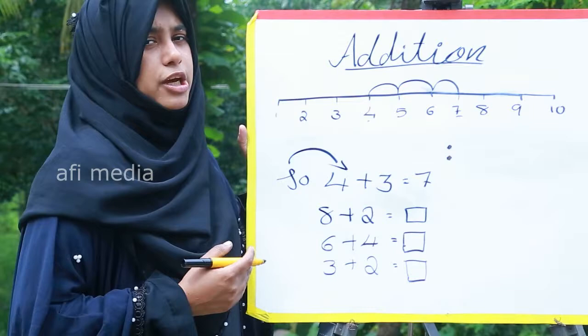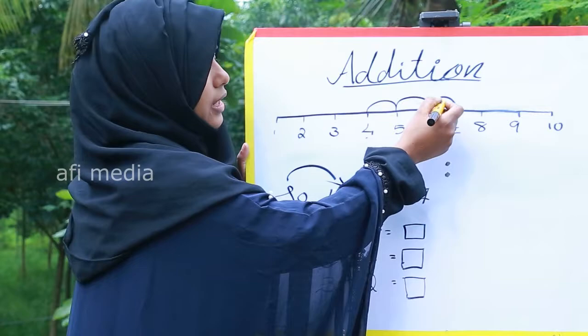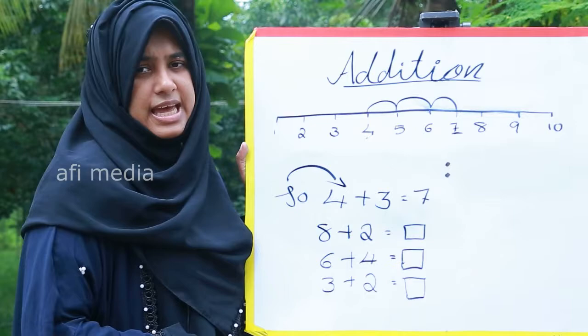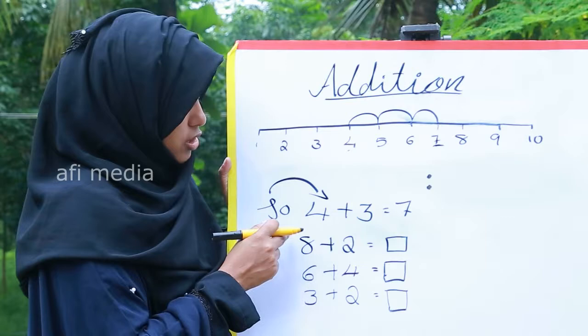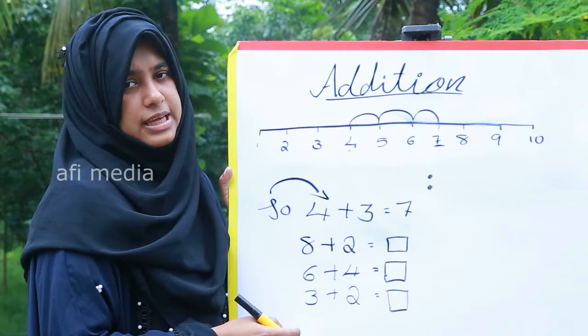I hope you understood how we can find out the sum — the total — using addition on the number line. We take four, then skip three lines and reach seven. That is the answer: 4 plus 3 equals 7. Now find the total sums of 8 plus 2, 6 plus 4, and 3 plus 2. Write them in your notebook by drawing a number line and finding the answers.